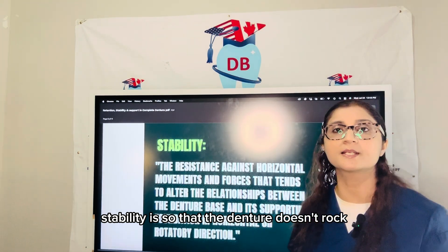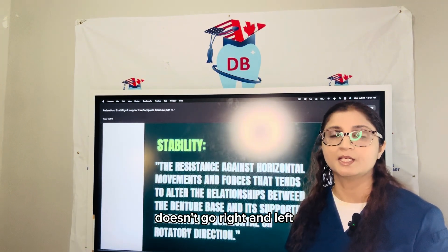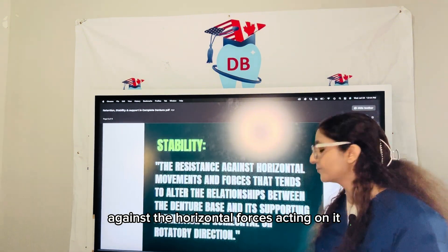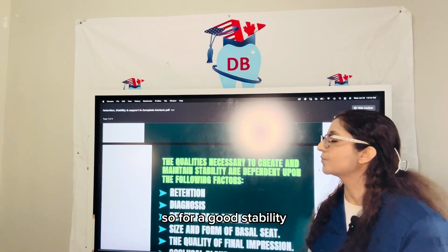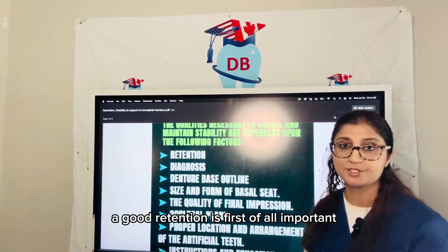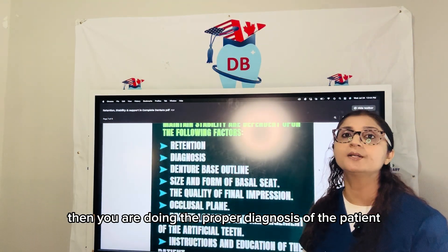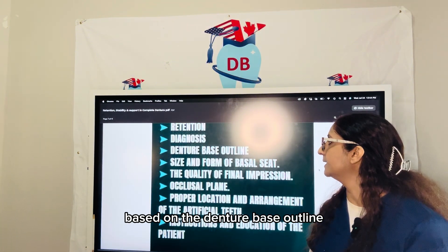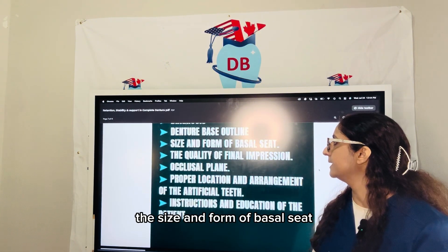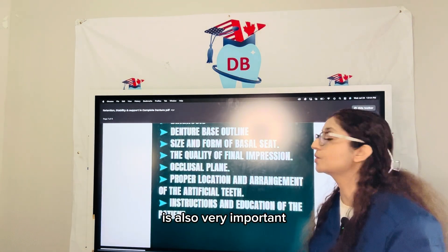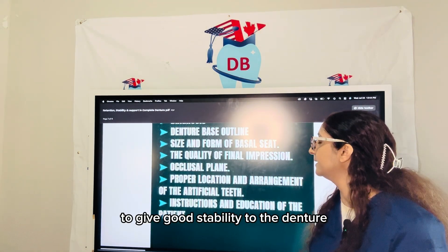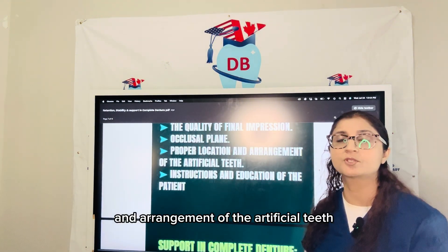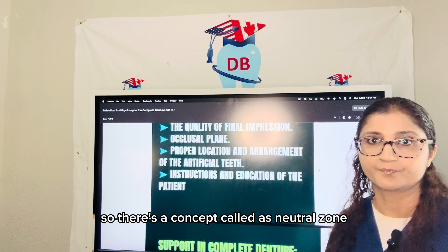Stability ensures the denture doesn't rock, doesn't go right and left — it is preventing the displacement of the denture against horizontal forces acting on it. For good stability, good retention is first of all important. Then proper diagnosis of the patient based on the denture base outline, size and form of the basal seat, and quality of the final impression are also very important. Proper location and arrangement of the artificial teeth matters as well.